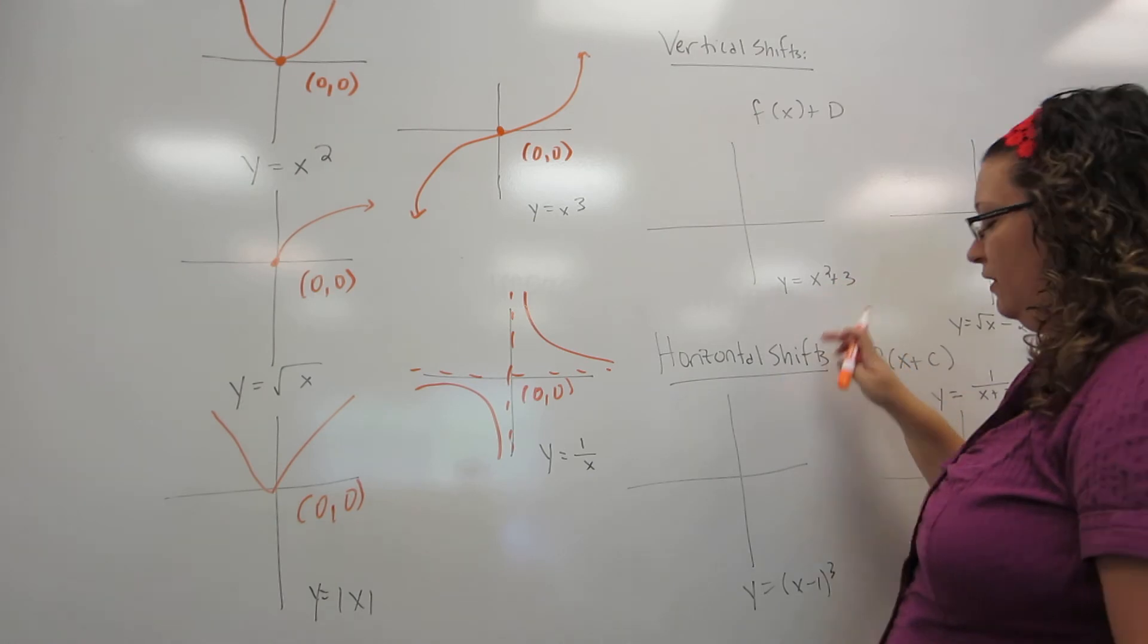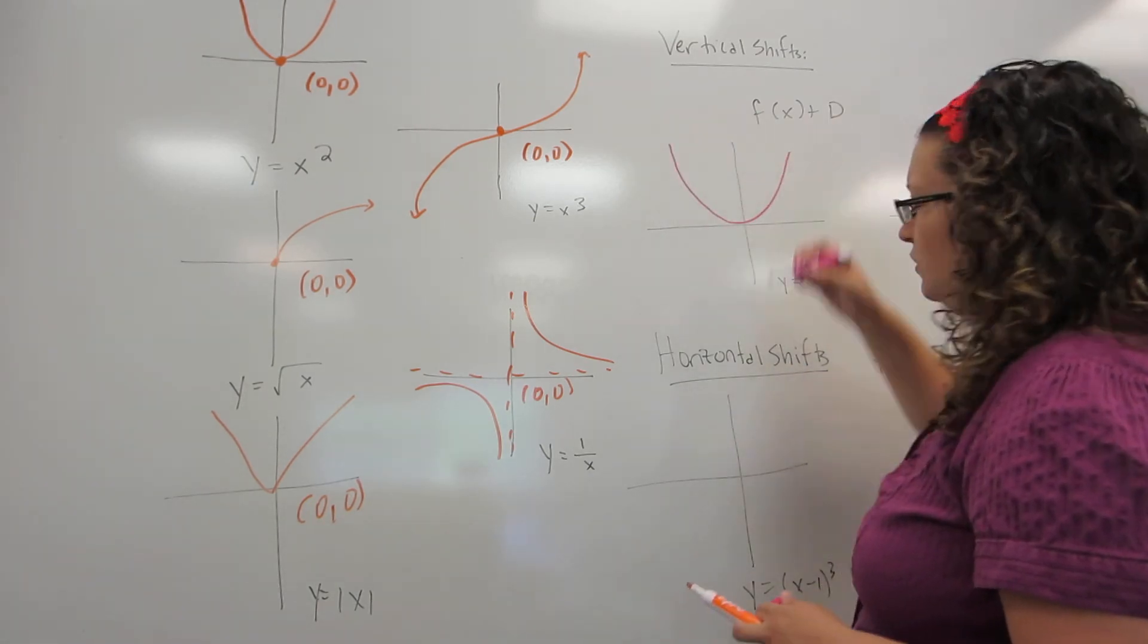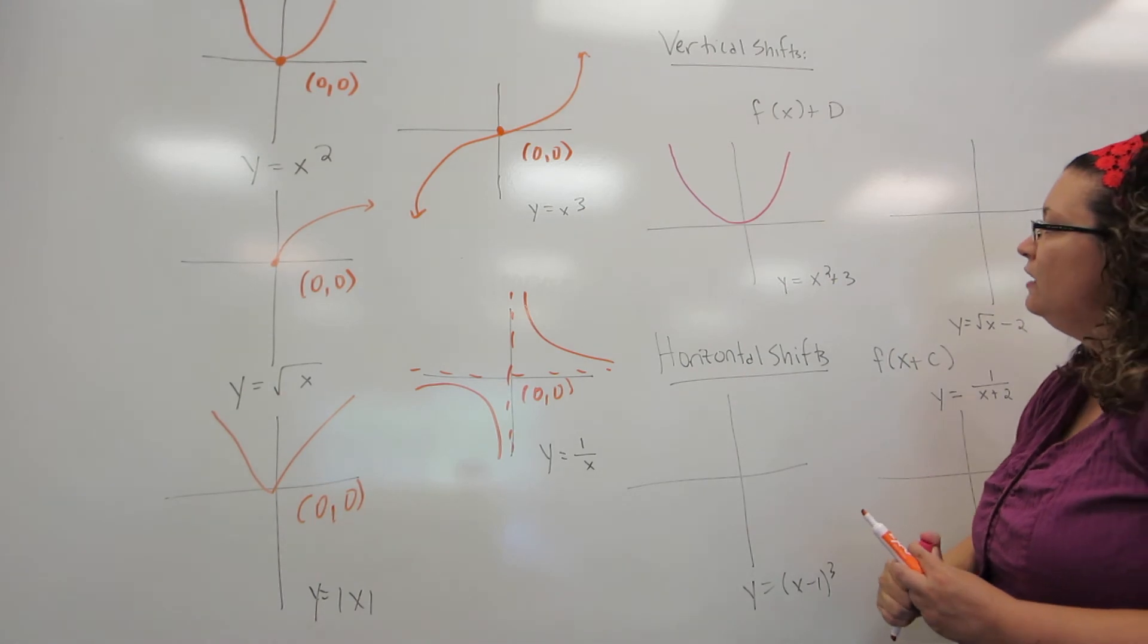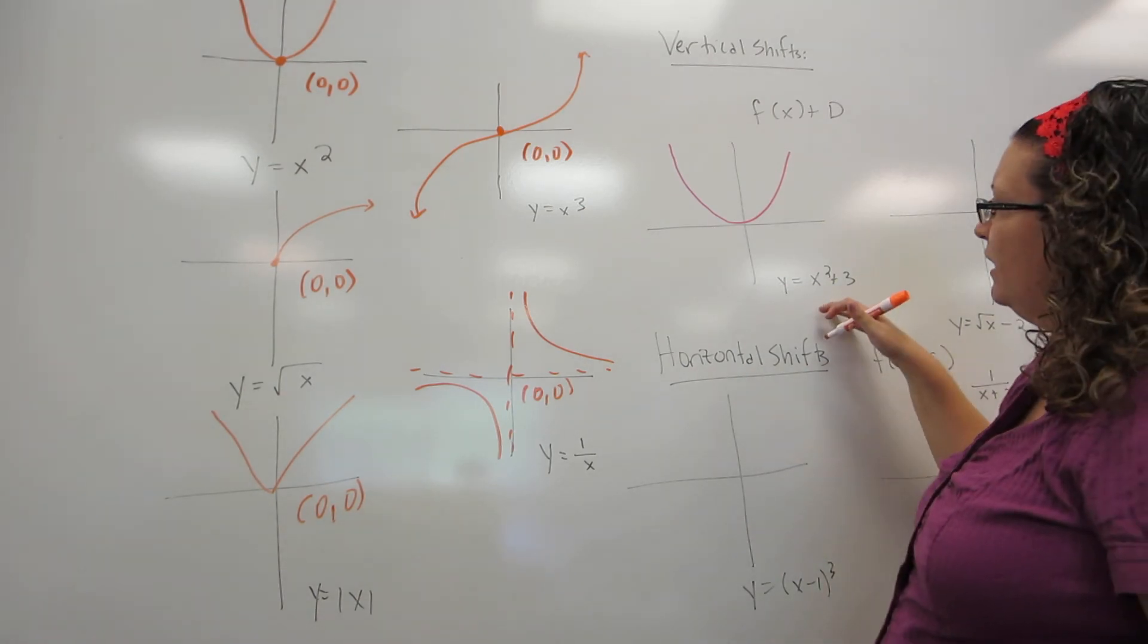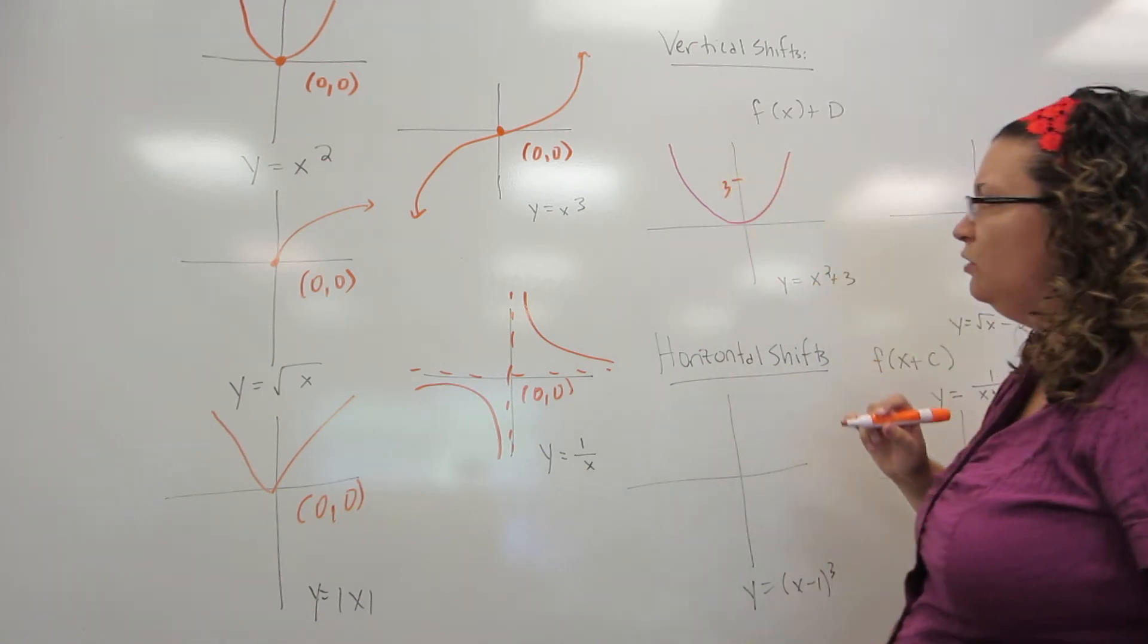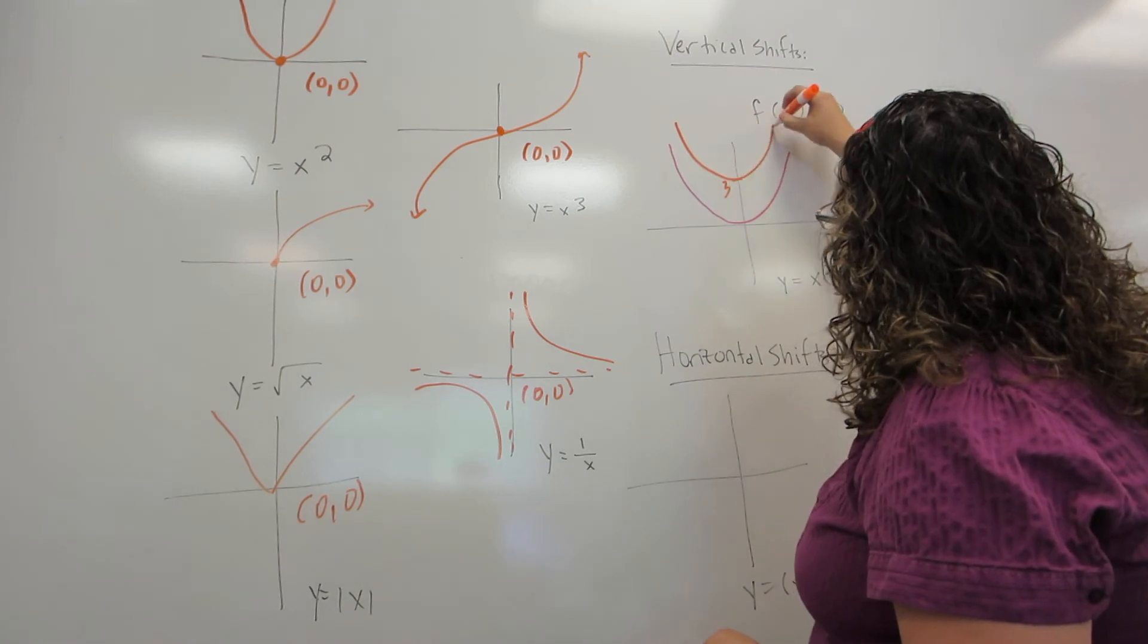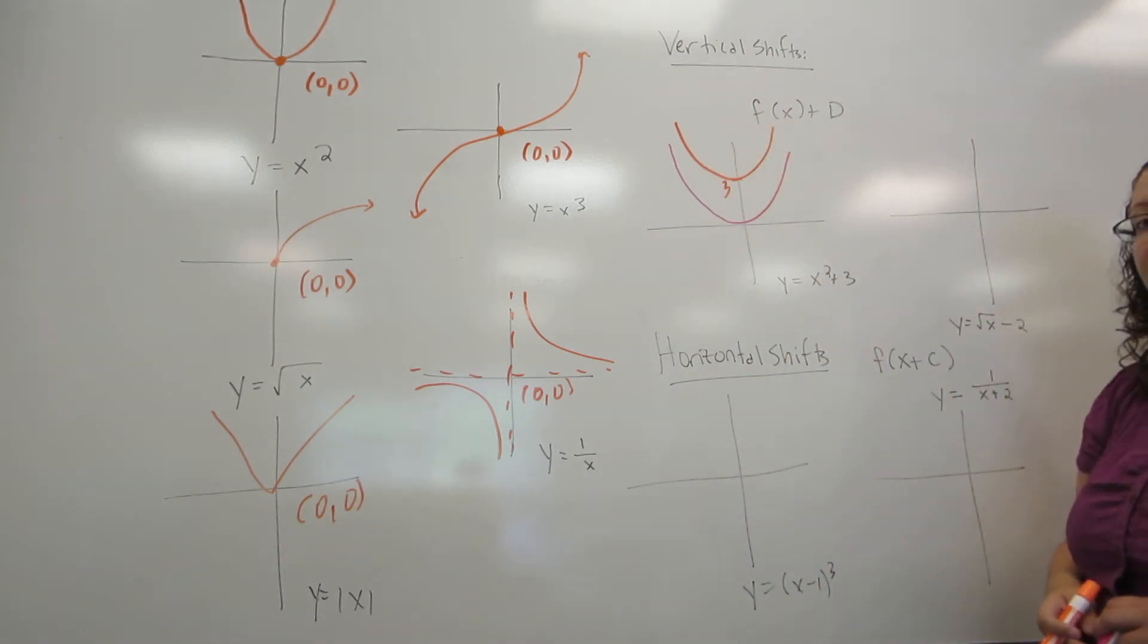So in this case, I would have the original graph, which is x squared. And then, x squared plus 3, I would take everything and move it up 3. So the only thing I'm going to label is where that vertex now is. And it would be a parabola with a vertex at 3 on the y axis.